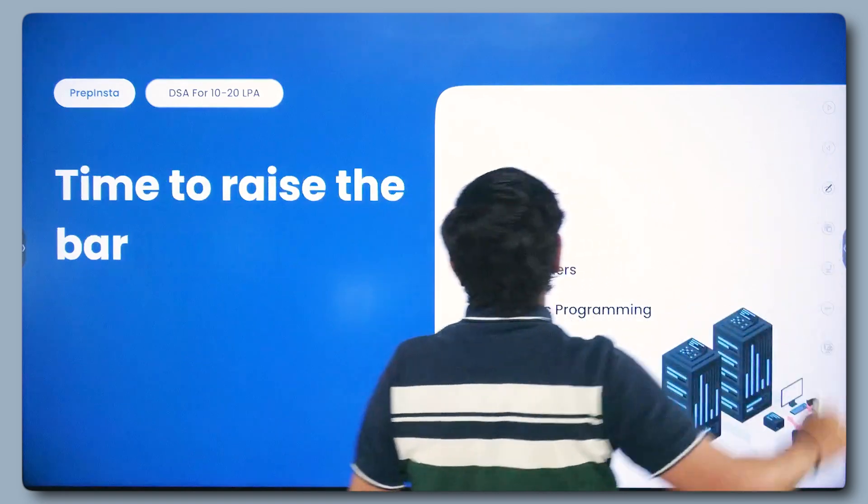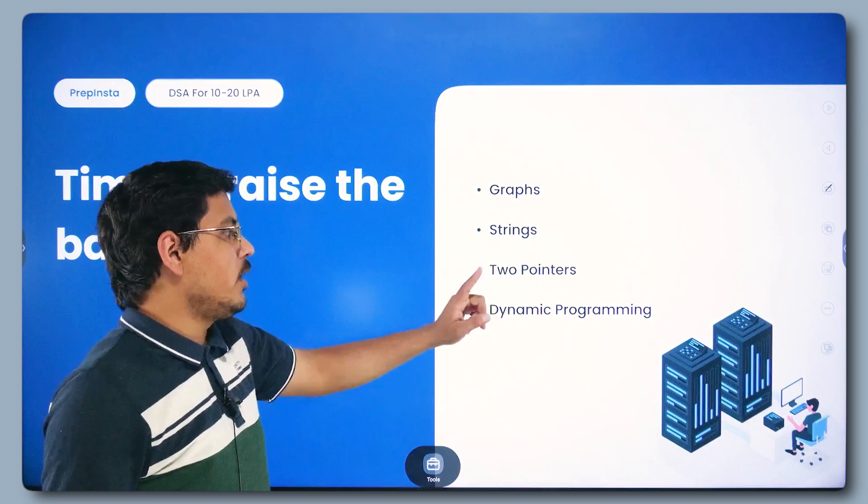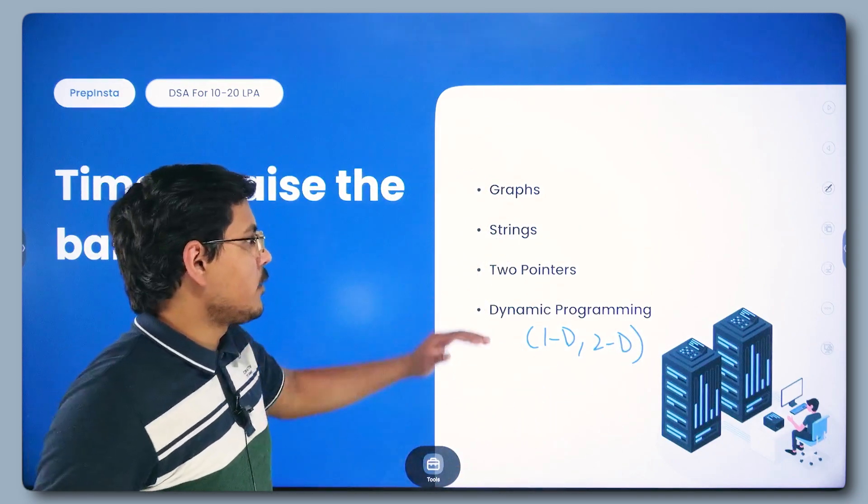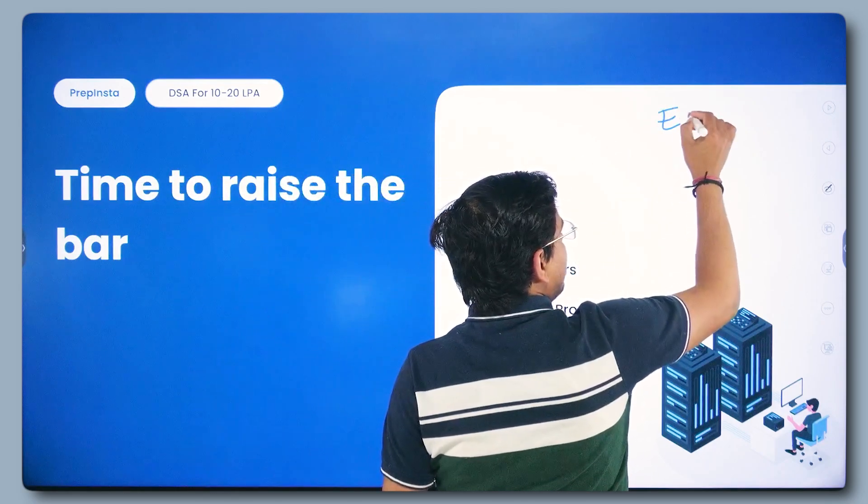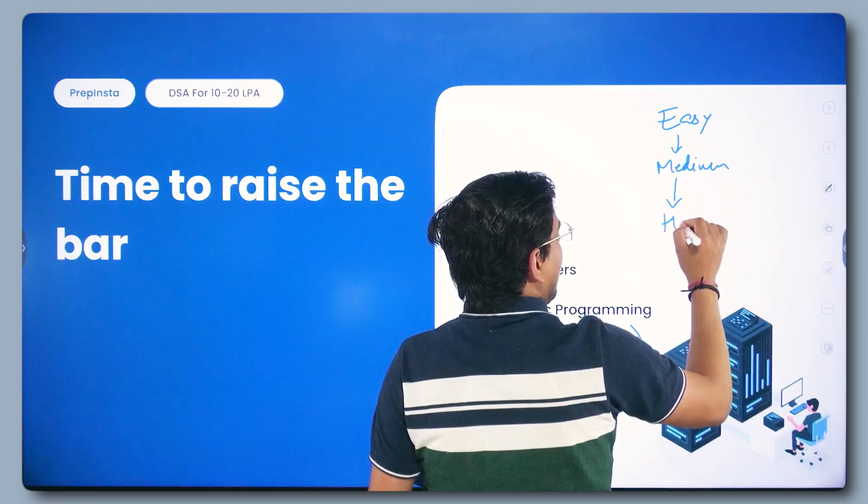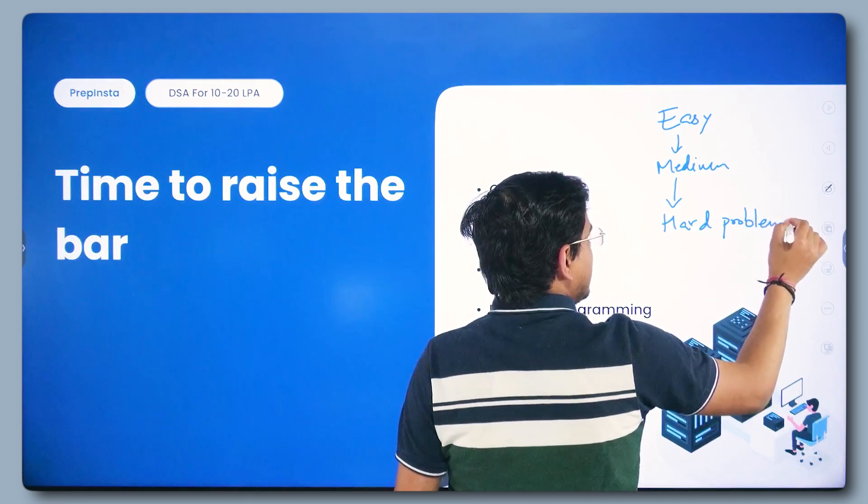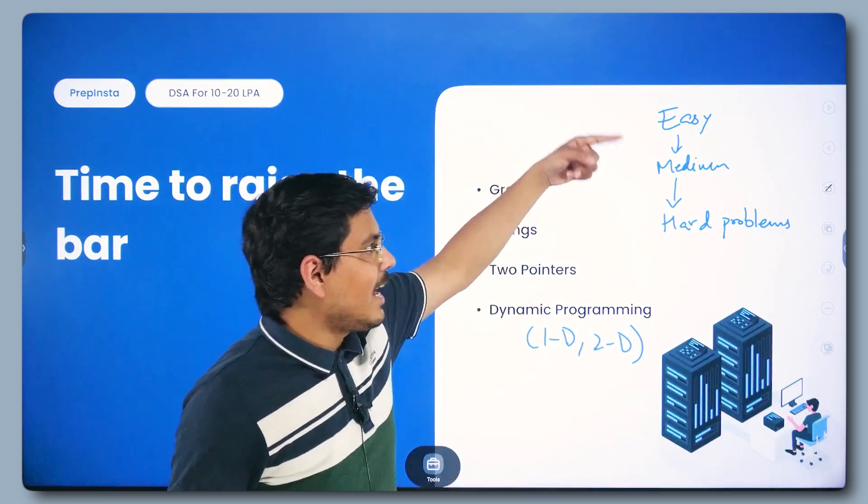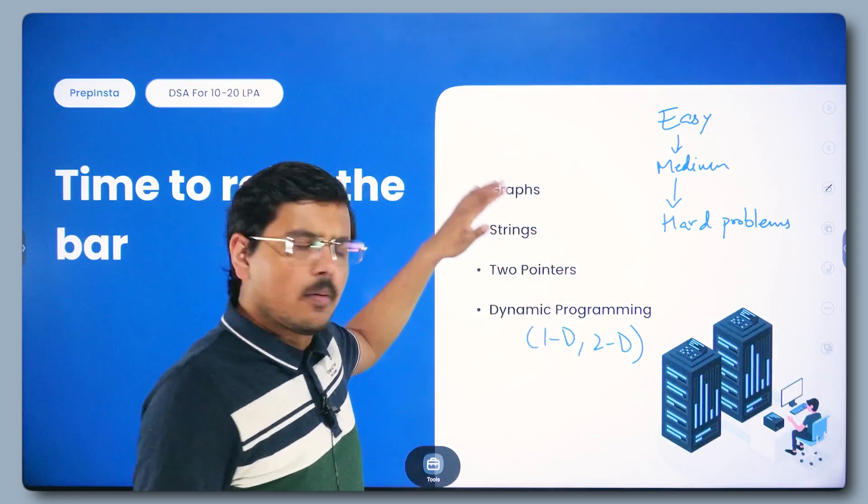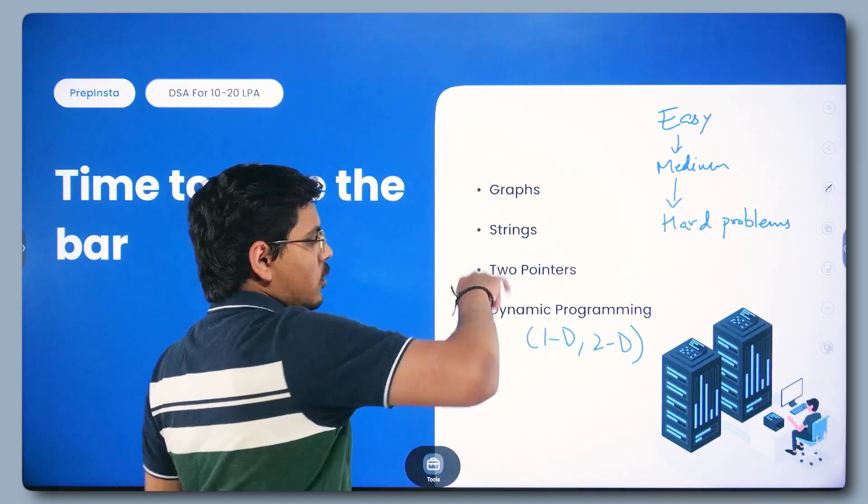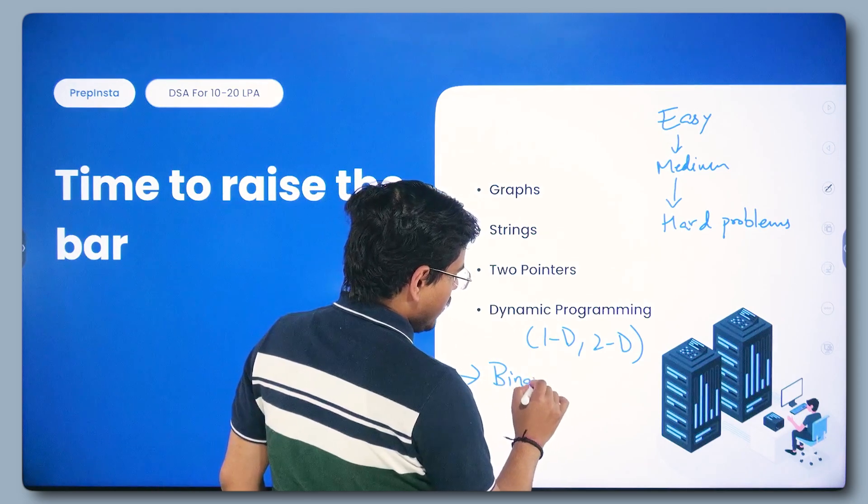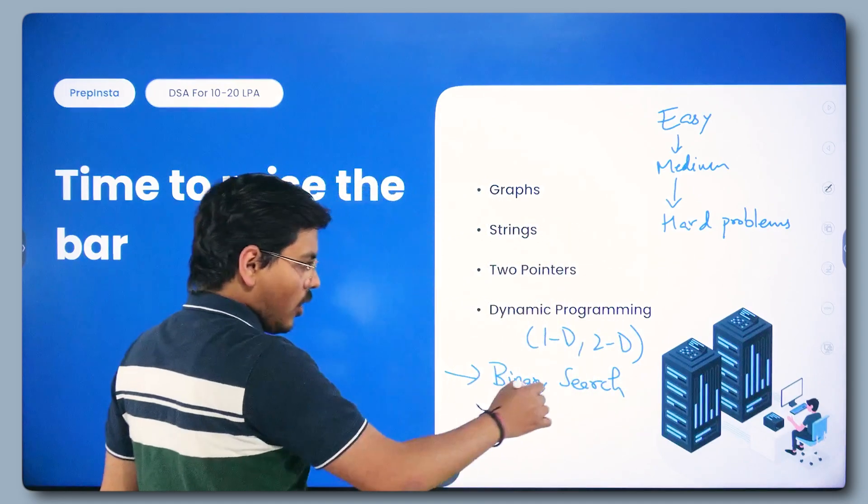Once this bunch is done, go ahead. These are the advanced topics: graphs, strings, two pointers, and dynamic programming, both 1D as well as 2D. You should go ahead and do. But when you're practicing this, again the same order: easy problems, then medium problems, then hard problems. In this easy, medium, hard procedure, you do easy problems again first for all of them, then you go to medium again, do all the medium problems for all these topics, then hard problems in the similar manner.